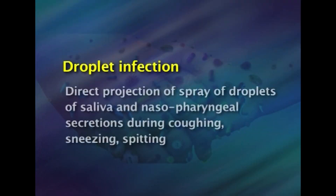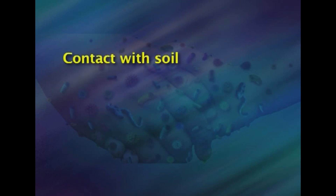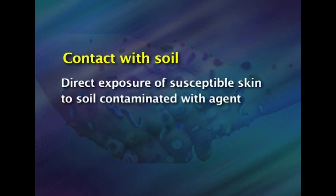Direct contact is seen in sexually transmitted diseases, AIDS, leprosy, and skin and eye infections. Droplet infection is the direct projection of spray of droplets of saliva and nasopharyngeal secretions during coughing, sneezing, and spitting; this is seen in respiratory infections, cold, fever, and tuberculosis. Contact with soil: direct exposure of susceptible skin to soil contaminated with agents is seen in hookworm and tetanus infections.